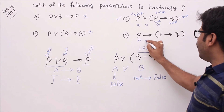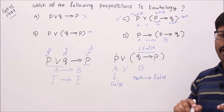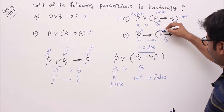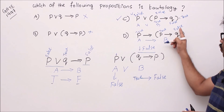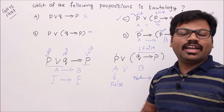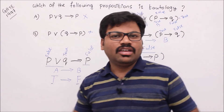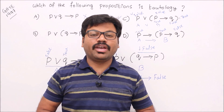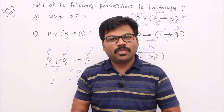Let's take option D. My target is making this formula false, so a should be true and b should be false. For that, p should be true and p implies q should be false — take p as true and q as false. With p true and q false, the overall formula is false. So this formula is sometimes false, meaning it cannot be a tautology. Finally, options A, B, and D all have assignments where the formula is false, but C doesn't — so C is the only tautology. That's how you answer GATE questions related to tautology.